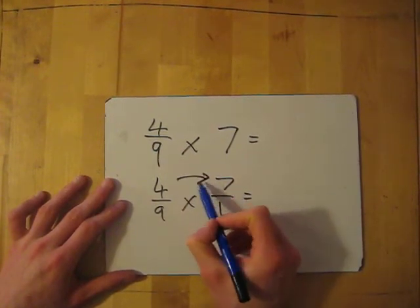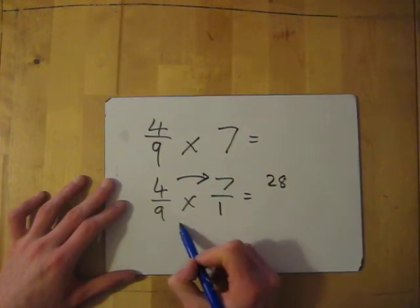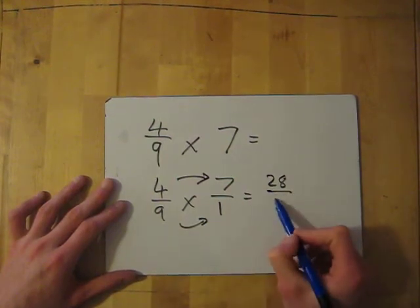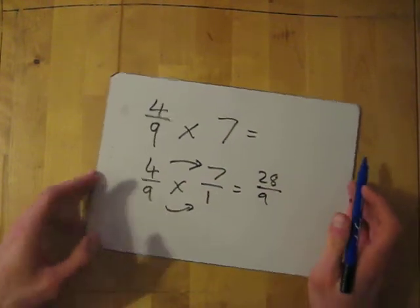Then multiply the top two: 4 times 7 is 28. Multiply the bottom two: 9 times 1 equals 9. And our answer is 28 over 9.